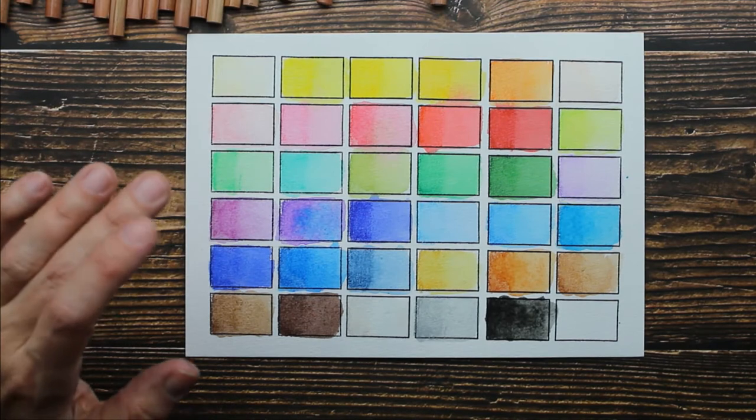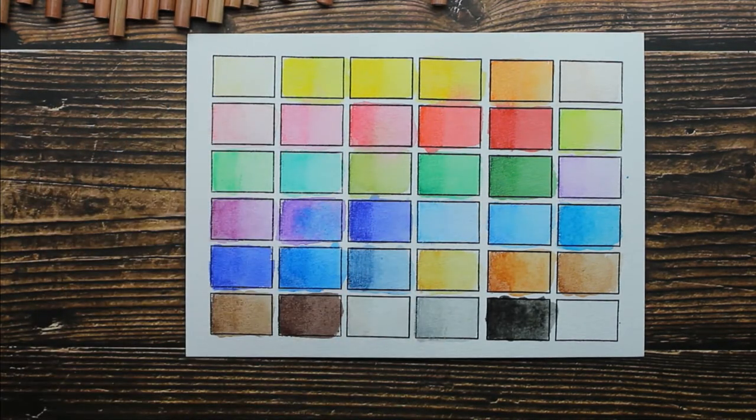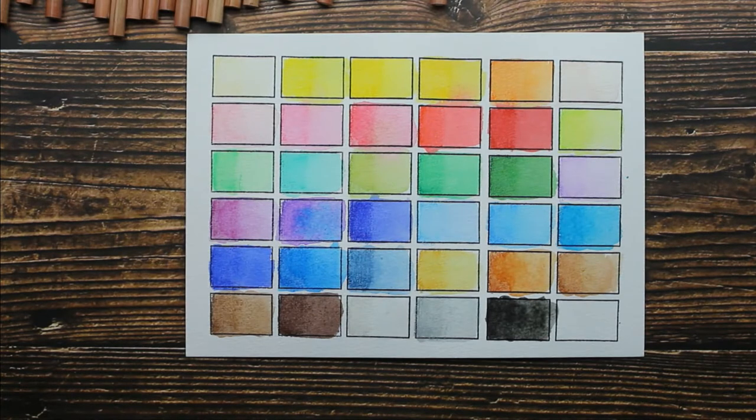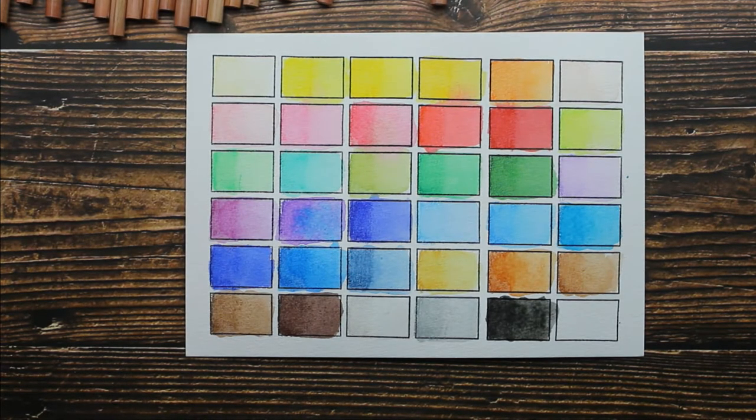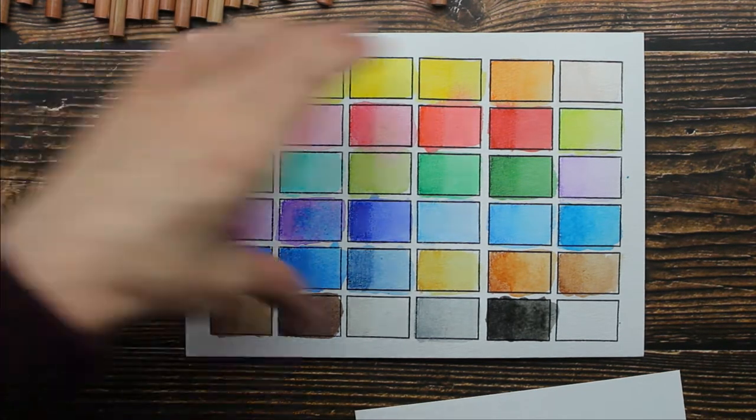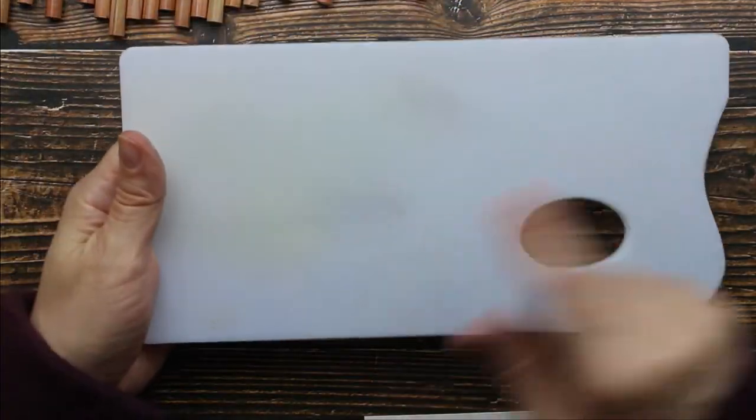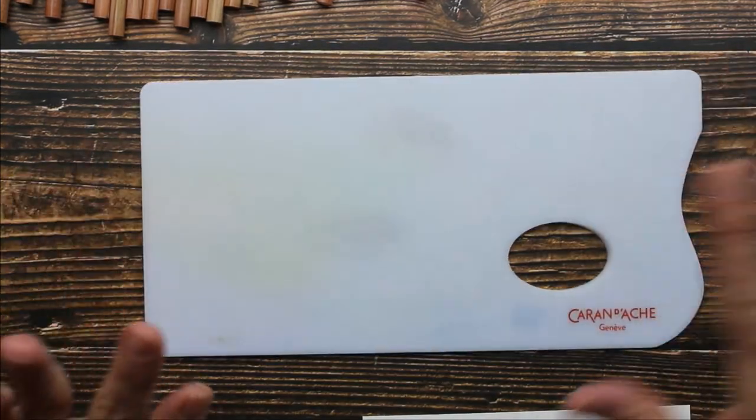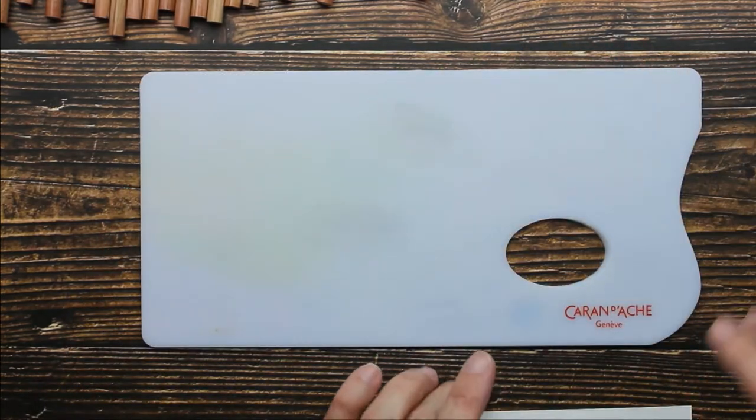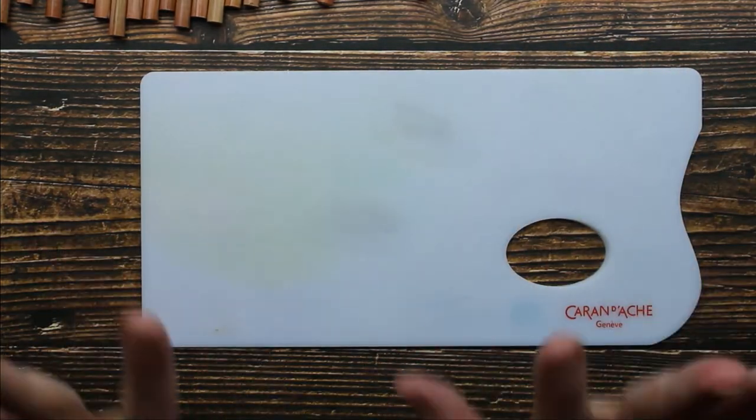Now, I'm going to show you guys how you can take these colors and make more colors. I'm going to go grab my palette. Grab another piece of watercolor paper. I'm going to move this to the side to dry. This is my Caran d'Ache palette for any wet media. Any wet media you can use this palette with. Let me show you how it works.